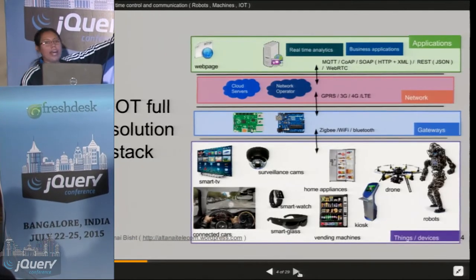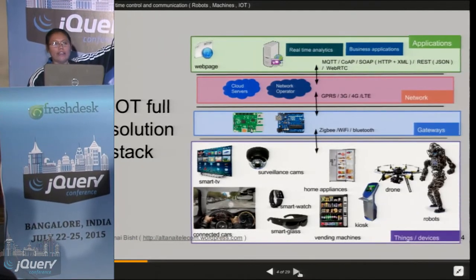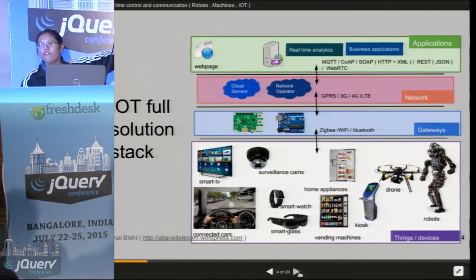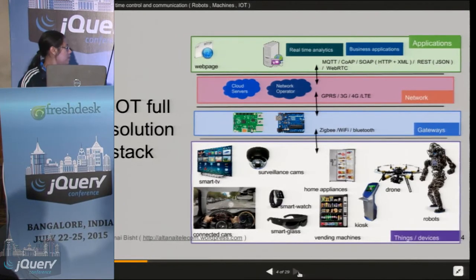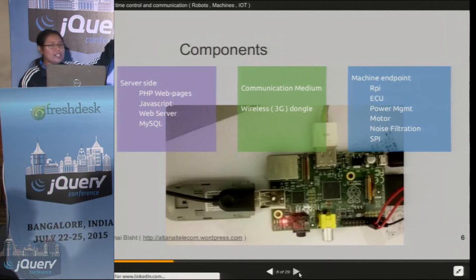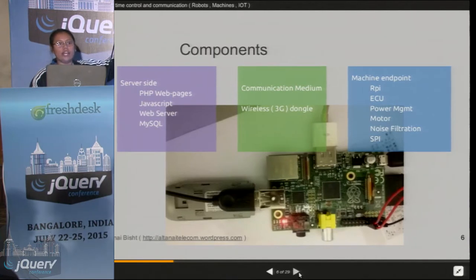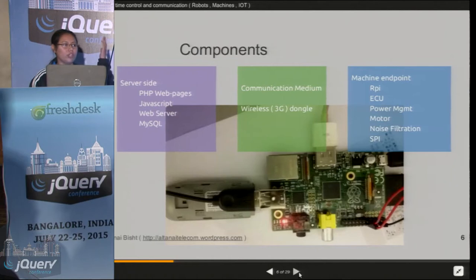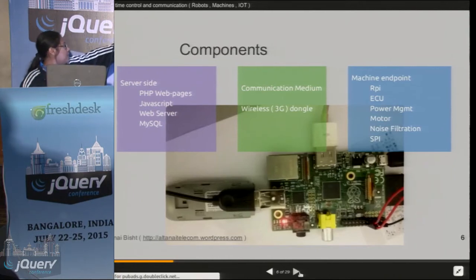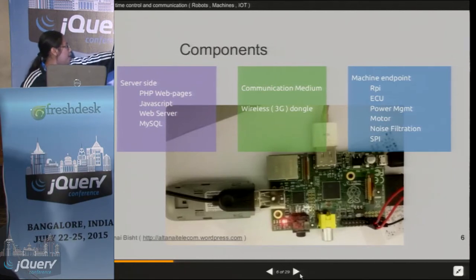This is plain IoT — we see stuff like this about IoT all the time. For the first thing — the basic IoT controlling light and fan from the web page — these are the basic components required.